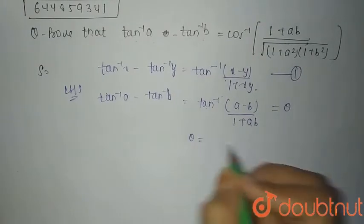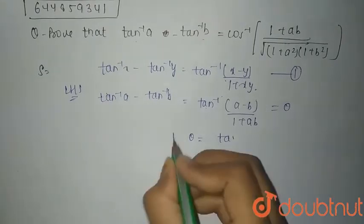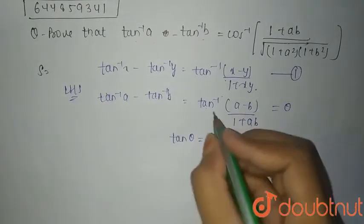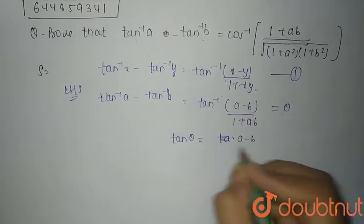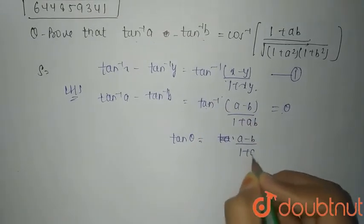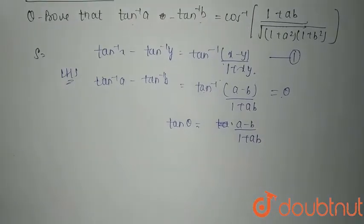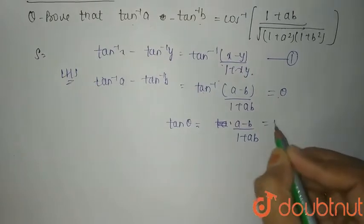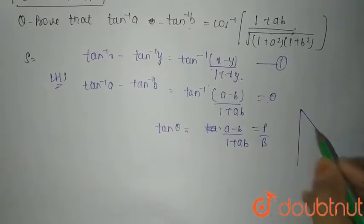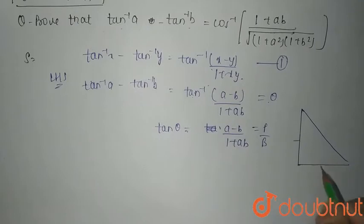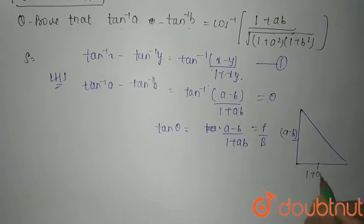So theta equals tan inverse of (a minus b)/(1 plus ab), which means tan theta equals (a minus b)/(1 plus ab). Since tan theta equals perpendicular upon base, we construct a right triangle where perpendicular is a minus b and base is 1 plus ab.